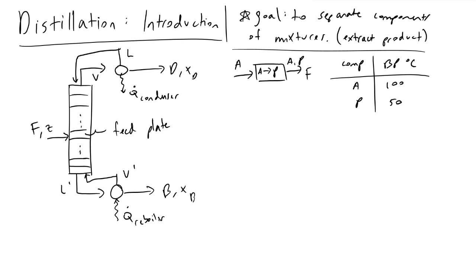I'm going to introduce a distillation column, describe how it works, and explain why it's useful and in what situations we can use it. I've looked up the tabulated values for reactant A and product P and found that reactant A has a boiling point of 100°C and product P has a boiling point of 50°C. This means product P will vaporize much more readily and is referred to as the lighter component, because it is much more likely to exist in the vapor phase than component A.